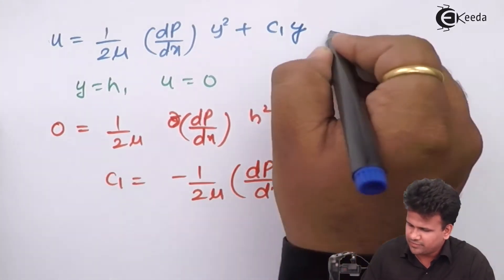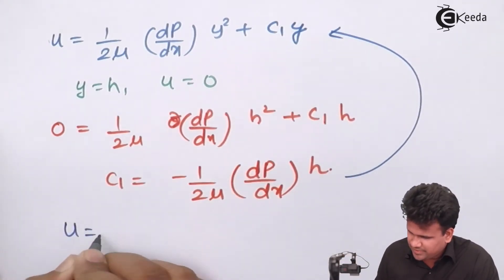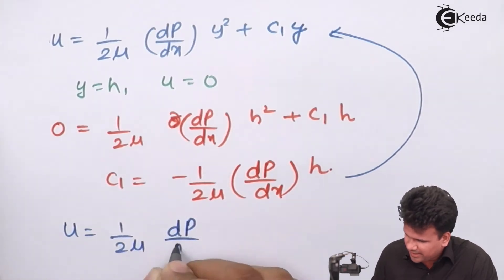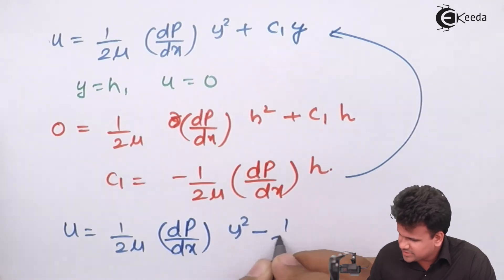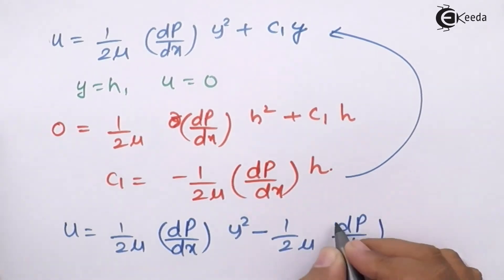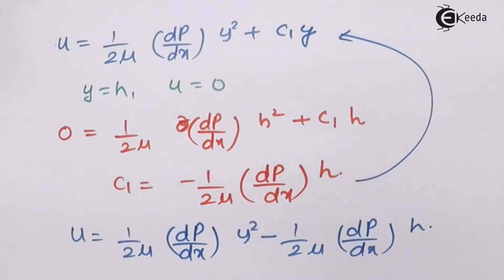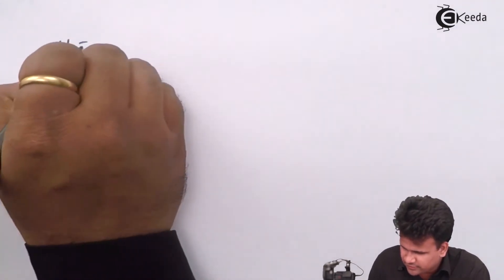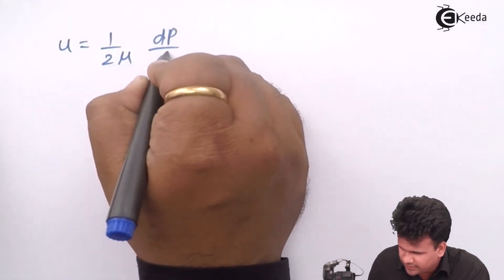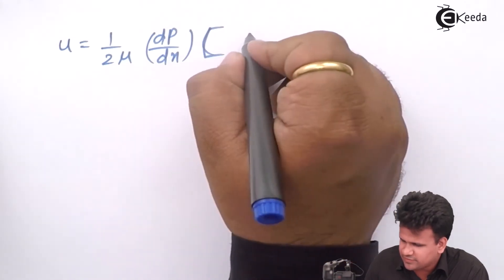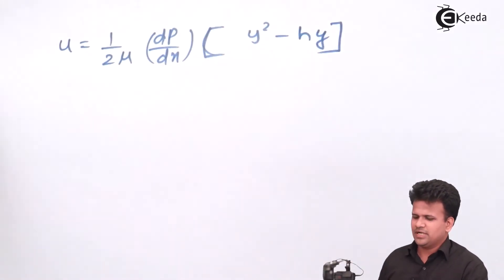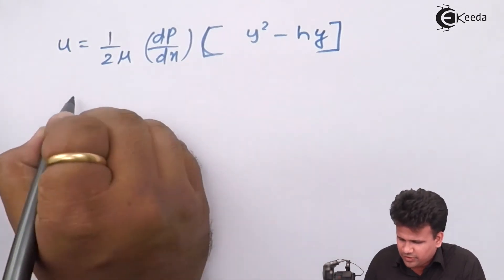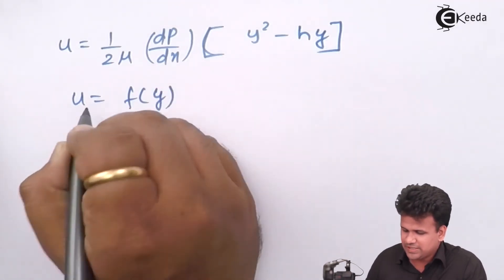Now let us substitute c1 back into the original equation. So u equals 1 upon 2μ · dp/dx · y² minus 1 upon 2μ · dp/dx · h · y. Taking 1 upon 2μ · dp/dx as common, u equals 1 upon 2μ · dp/dx times the quantity (y² − h·y). So we have u as a function of y, and the curve it traces will be a second degree curve.